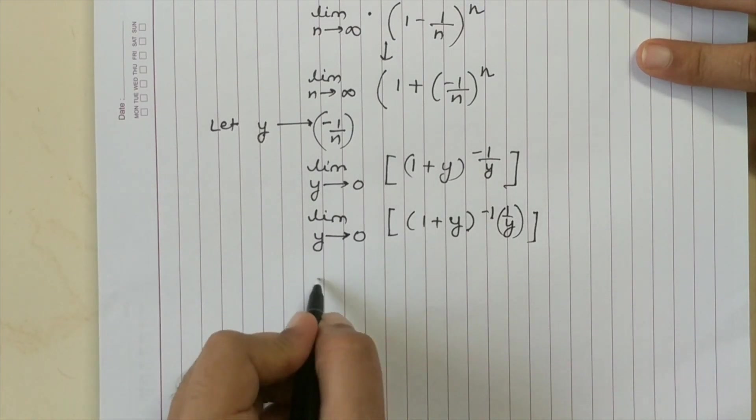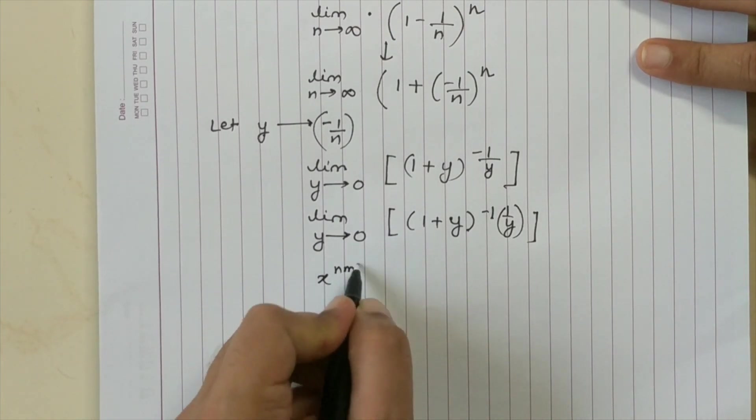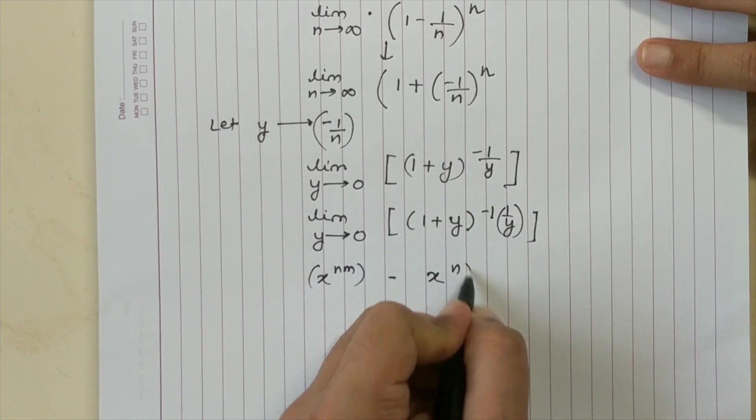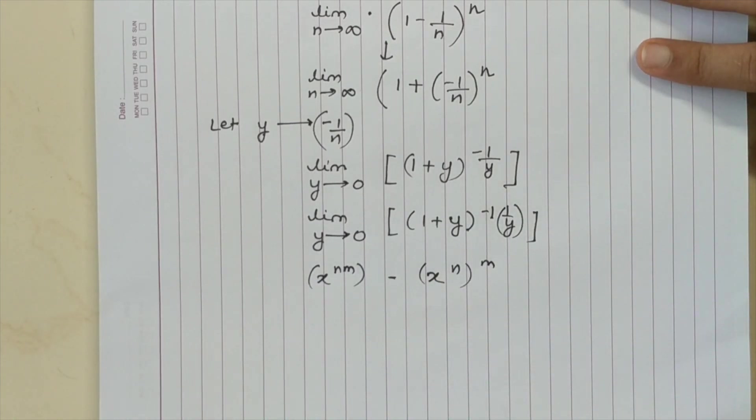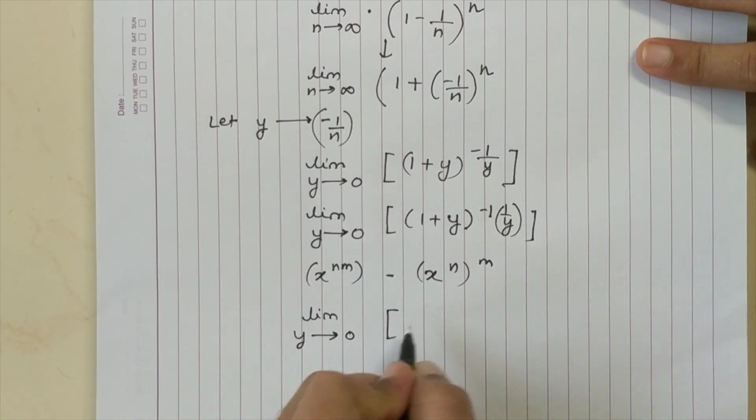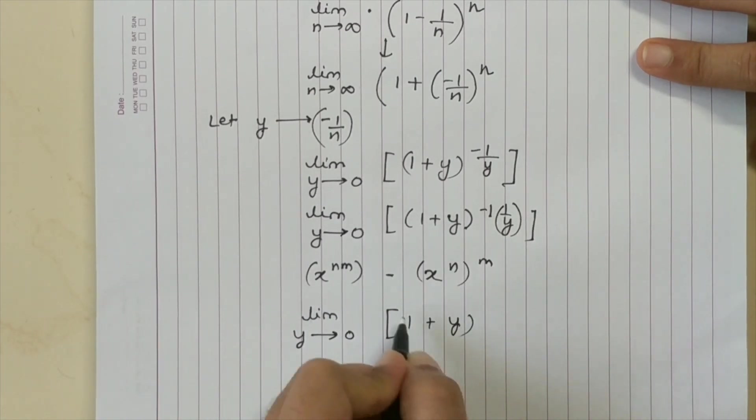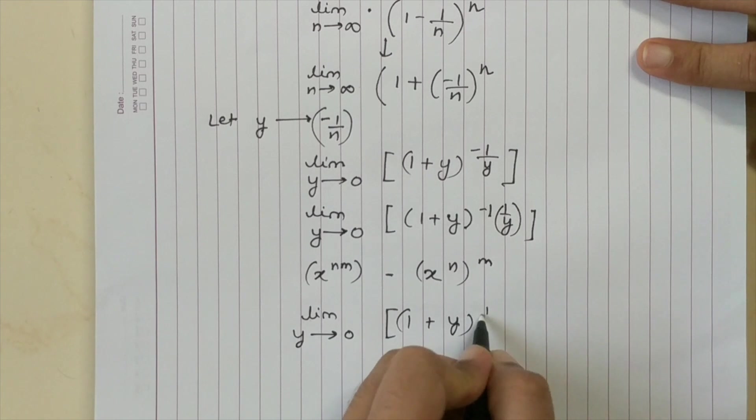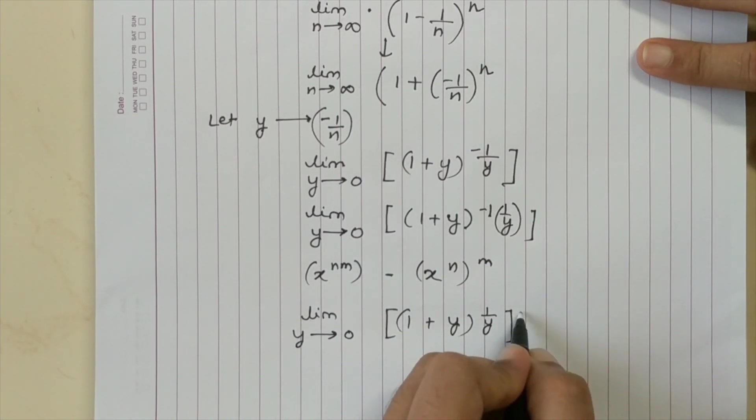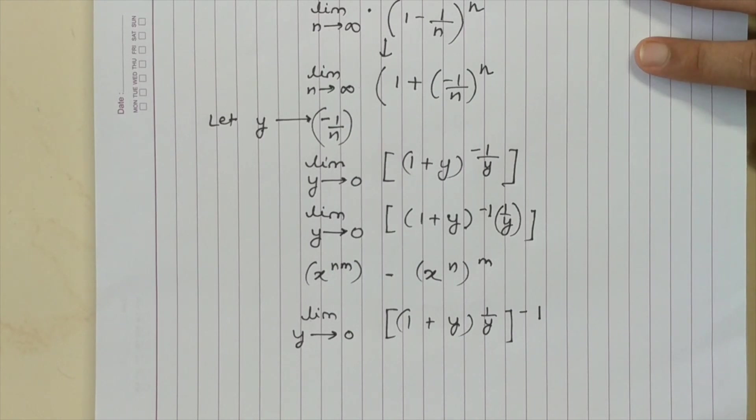Now playing around with this equality again. As we know, X to the power N into M is equal to X to the power N raised to M. So limit Y tends to 0, 1 plus Y raised to 1 by Y, again raised to minus 1 is what I have to compute the limit for.